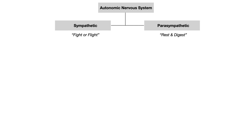The autonomic nervous system is broken down into two components: the sympathetic nervous system and the parasympathetic nervous system. Classically you might have heard of these referred to as fight or flight and rest and digest. The sympathetic nervous system is what kicks in when your body needs to activate itself in the presence of extreme stress — the classic example is deciding to fight a bear or run away from the bear.